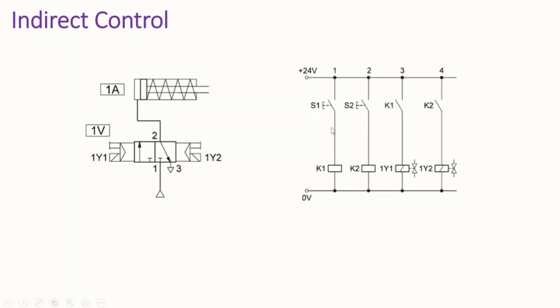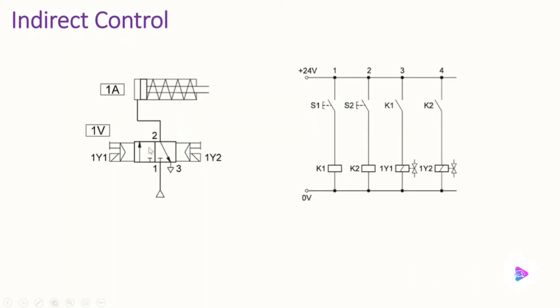Looking at the electric circuit, we have two switches connected to relays K1 and K2. These two relays are connected to two make switches K1 and K2, both in the open condition, and they are connected to two solenoids which are connected to control valve 1V. When talking about indirect control, we are dealing with the combination of switches, relays, make switches, and solenoids — instead of a direct connection between switches S1 and S2, we have the relays K1 and K2 making the connection between the switches and solenoids 1Y1 and 1Y2.